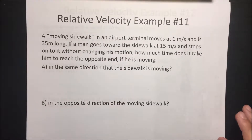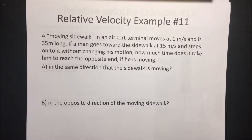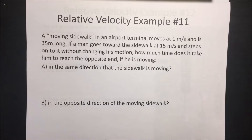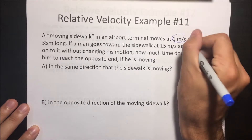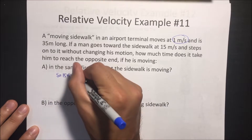Next question: a moving sidewalk in an airport terminal moves at 1 meter per second and is 35 meters long. If a man walks at 15 meters per second and steps on it without changing his motion, how much time does it take him to reach the opposite end if he is moving in the same direction as the sidewalk? Let's do same direction first. When the person steps onto the sidewalk moving at 1 meter per second, his speed is going to be 15 plus 1, which is 16 meters per second.